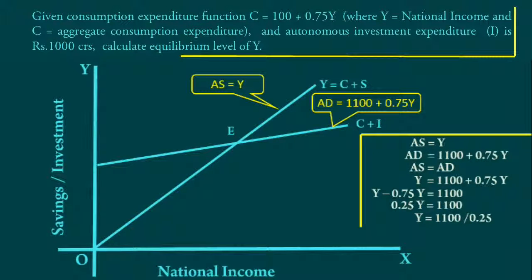Then Y = 1100 ÷ 0.25 = 4400. Equilibrium income is 4400 crores.